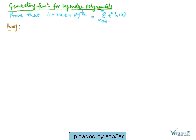We have to prove that (1 - 2xt + t²)^(-1/2) is equal to the summation from n equals 0 to infinity of t^n · Pn(x).